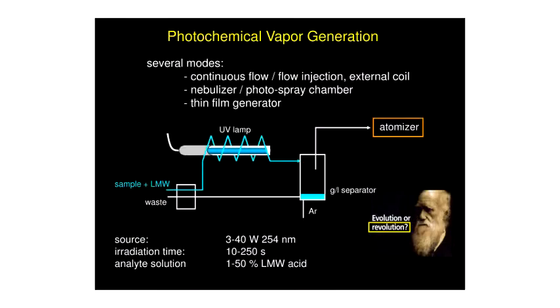I'd like to introduce you to photochemical vapor generation. It's what we're doing in our laboratory at the moment. It's certainly very different from what inorganic chemists know about photochemistry, because there are no reports in the photochemical literature about volatile molecular metallic species being formed by photochemical techniques.